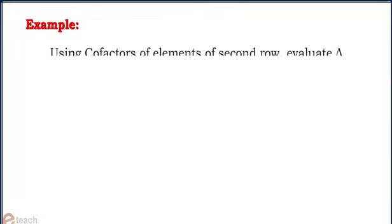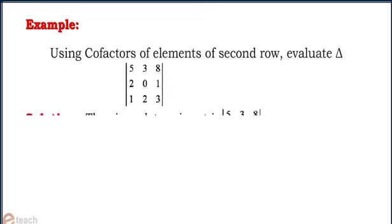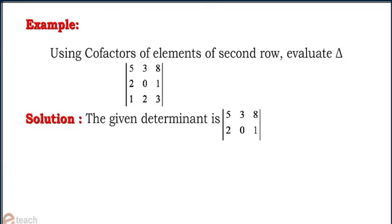Let us have an example. Using cofactors of elements of second row, evaluate the determinant 5 3 8, 2 0 1, 1 2 3. The given determinant is 5 3 8, 2 0 1, 1 2 3.